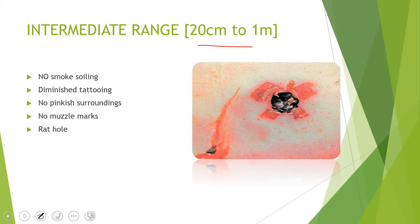At intermediate ranges there will be diminishing smoke, soiling, and burning of the skin. The powder tattooing may persist or it may not be present. The spread of shot will begin.